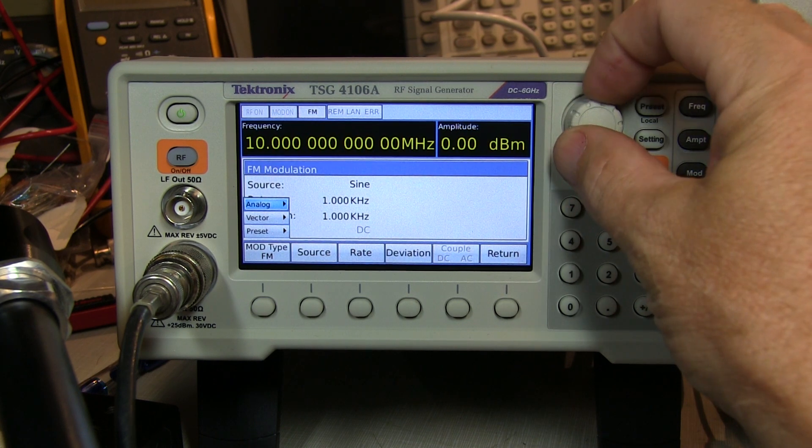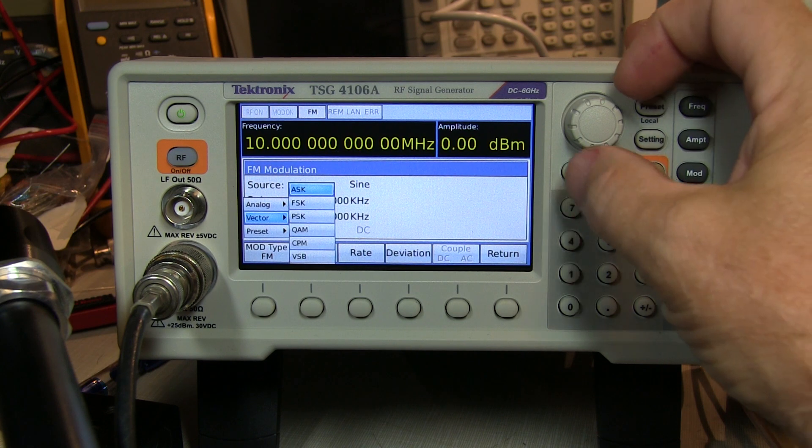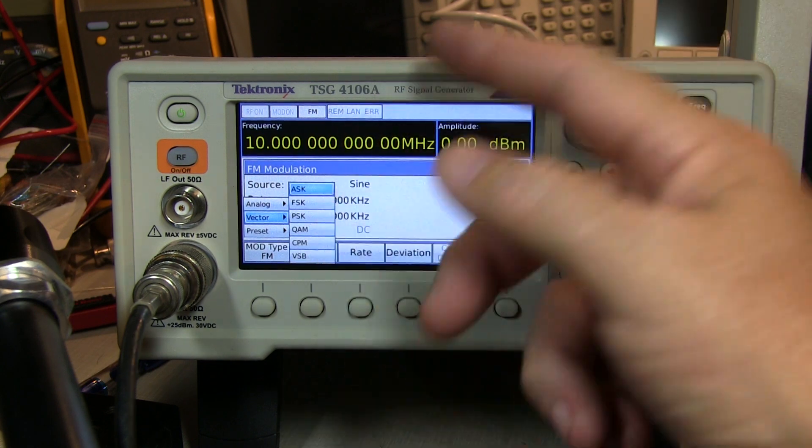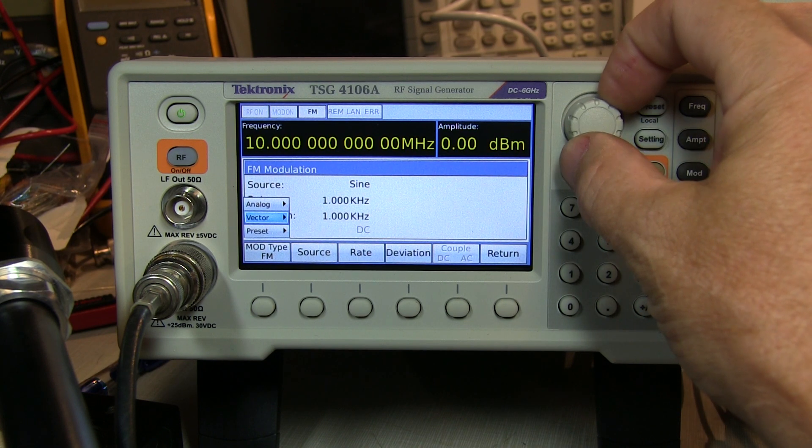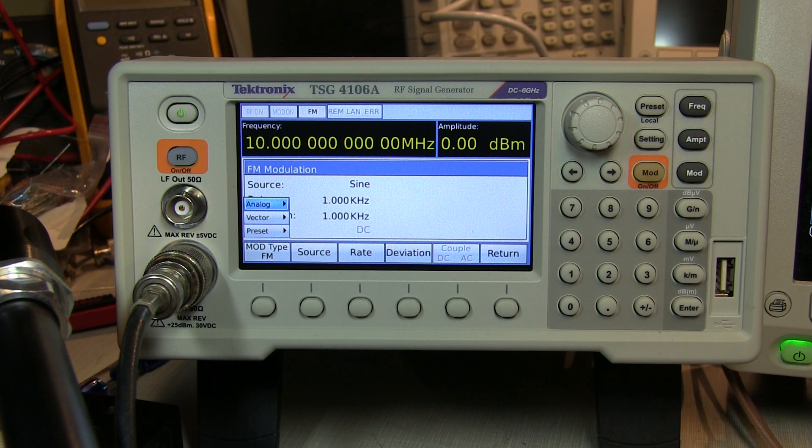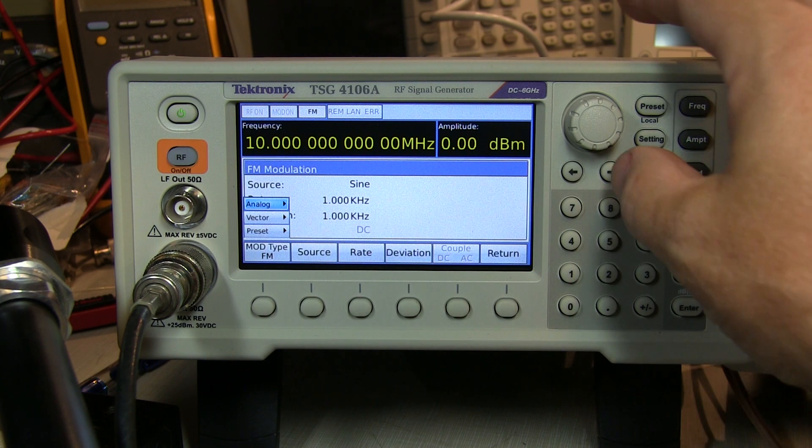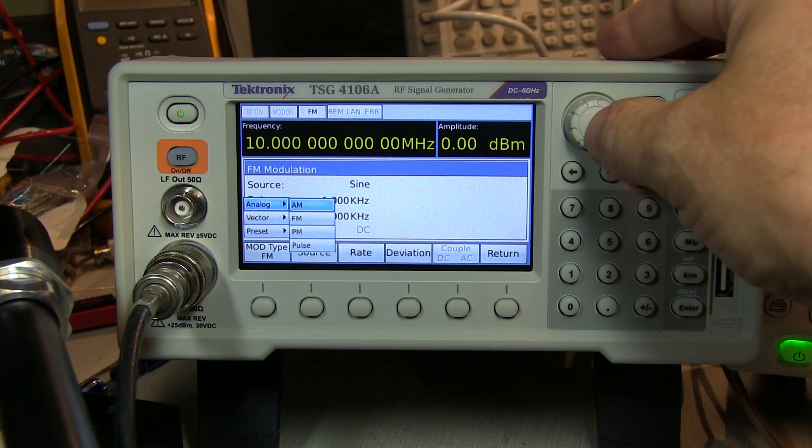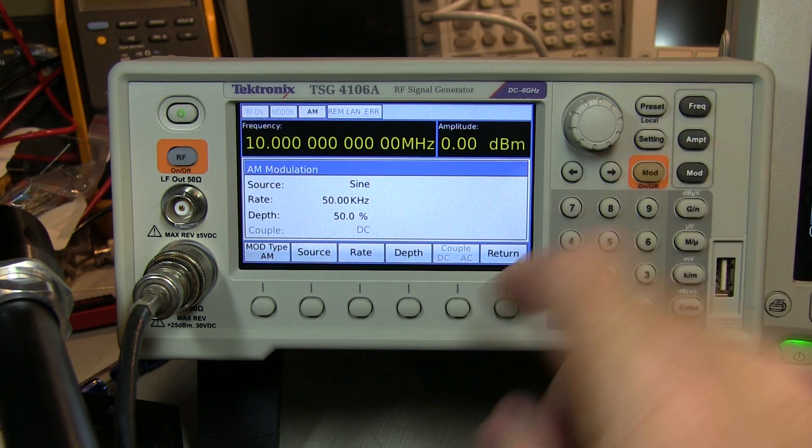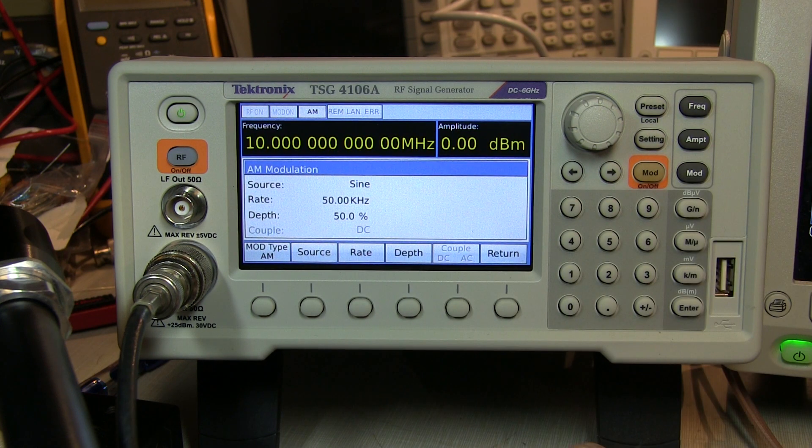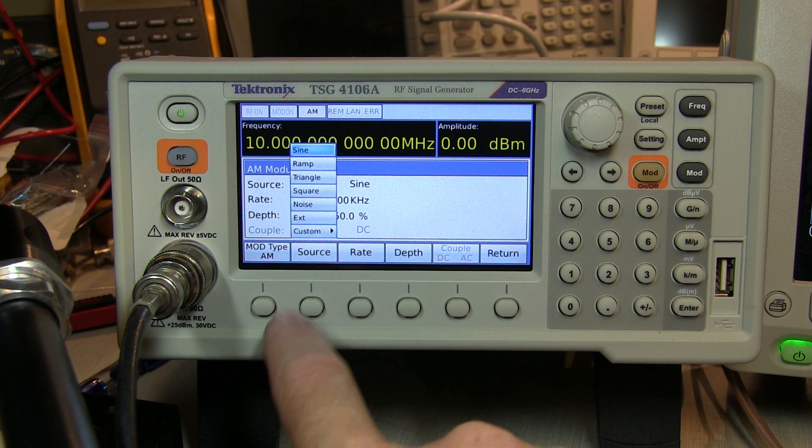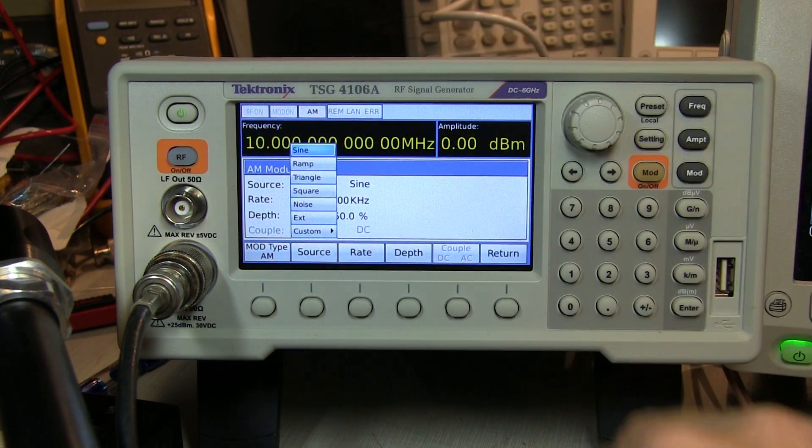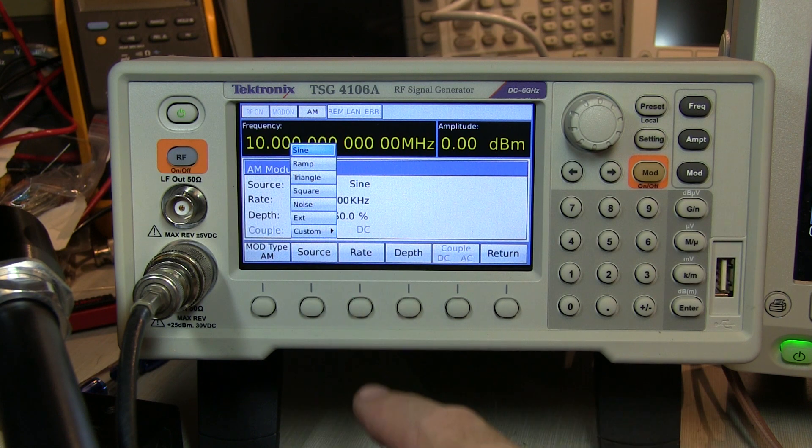You can move back. We select vector modulation. That allows us to select ASK, FSK, QAM, etc. And there's a couple of standard presets. So very simple to go and set the various modulation parameters. Once you pick a particular modulation type, let's say we pick AM, the rest of the menus will change to allow you to adjust that. You can pick the baseband source, which could be an internal source, sine wave, ramp, triangle, square, noise, or an external source or a custom waveform that you load in.